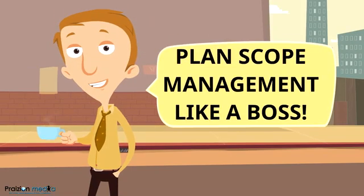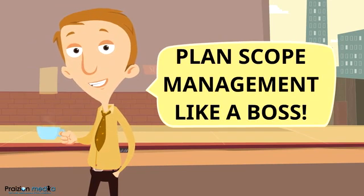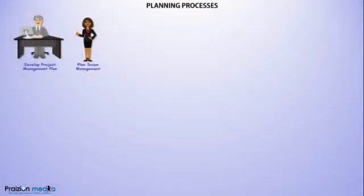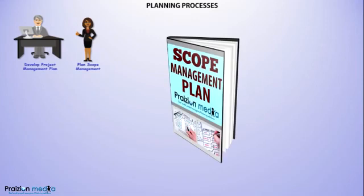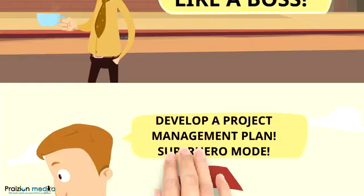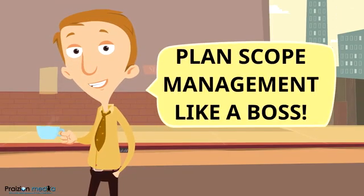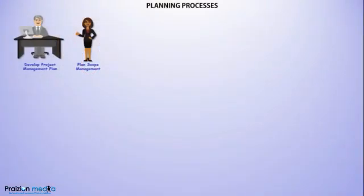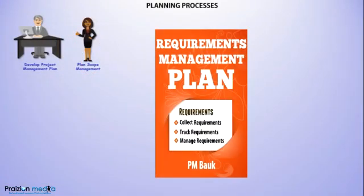The next process takes us to the scope management knowledge area, and this process is called Plan Scope Management. Plan scope management is where the scope management plan — which defines how to manage scope — is developed. It also defines how scope will be fleshed out in defining the scope and creating a WBS. From this process we also get an output known as the requirements management plan.